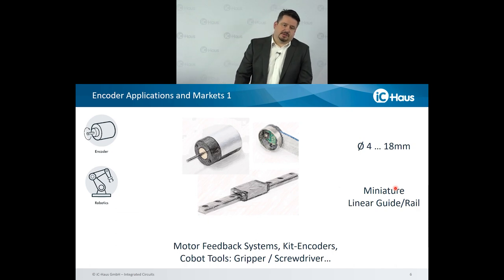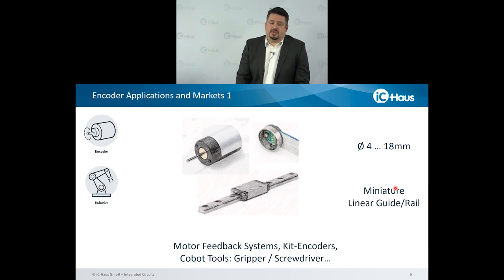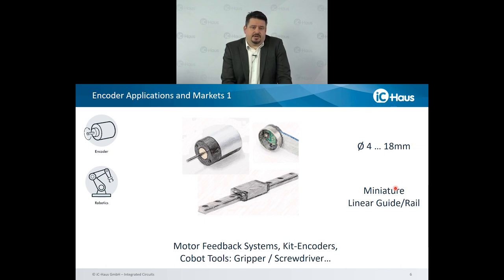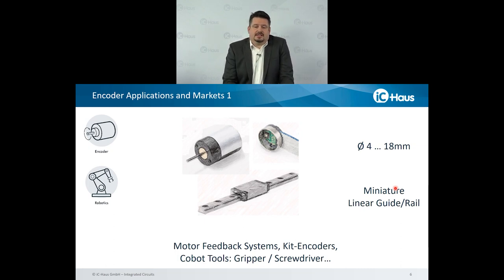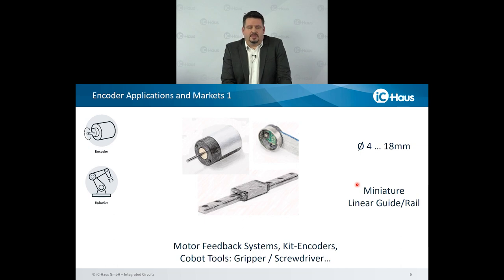So let's start with some basic things about motor feedback systems. Of course, all these encoder ICs are used in motor feedback systems in different variations, types, and variants. When we talk about mini encoders, we focus on diameters starting from 4 millimeters up to less than 20 millimeter diameter. But we also have some solutions with our sensors in the miniature linear guide or rails, which needs a very small sensor in their sensor head.